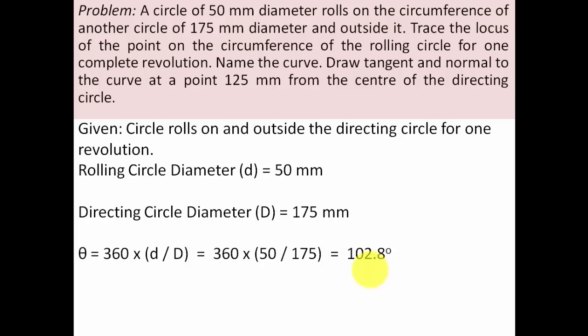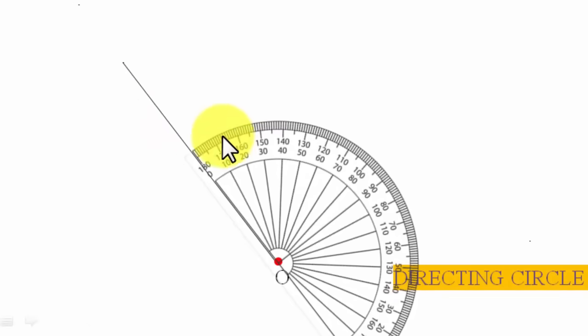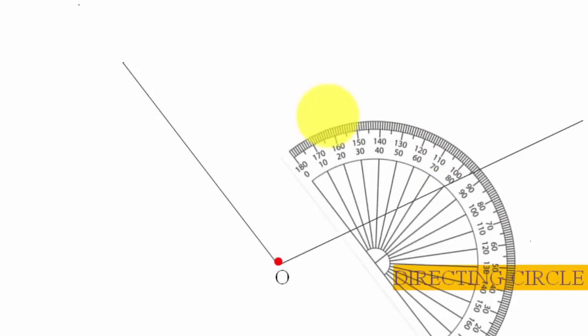Let's get started with the construction. We mark a point O as the center of the directing circle. Rather than drawing the entire directing circle, we draw a sector of 102.8 degrees. This line represents the radius of the directing circle at 87.5 mm. Using a protractor, we mark 102.8 degrees — approximately 103 degrees — and draw the second radius line.